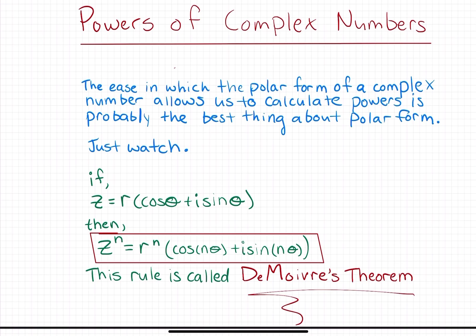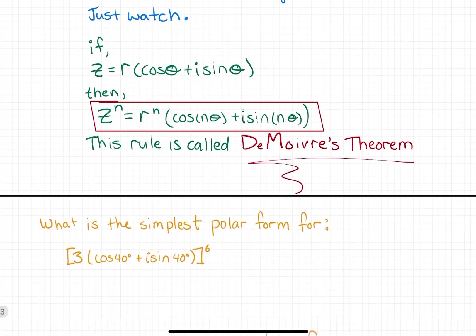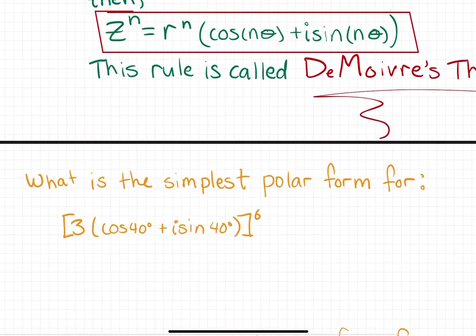Sometimes they'll tell you to leave it in polar form, but sometimes you'll have to convert it back to rectangular form. Let's get started with a simple example where it gives it to you in polar form and wants you to simplify it in polar form.